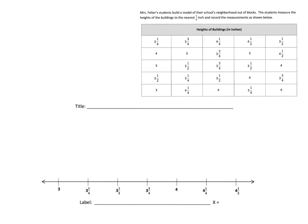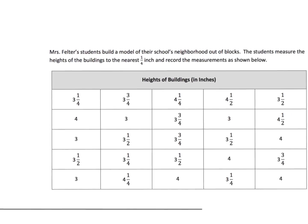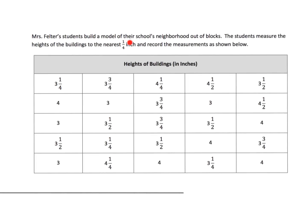Here is all the information we've been given. It says Mrs. Felter's students build a model of their school's neighborhood out of blocks. The students measure the heights of the buildings to the nearest quarter inch and record the measurements as shown below. One thing you'll notice is it says to the nearest quarter inch, but we have some halves in there, and that's going to add a little bit of complexity. We want students to recognize that four and a half is the same thing as four and two quarters.